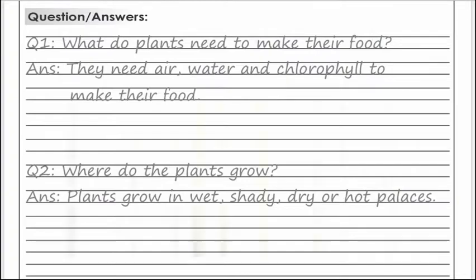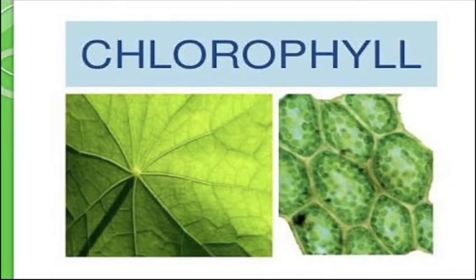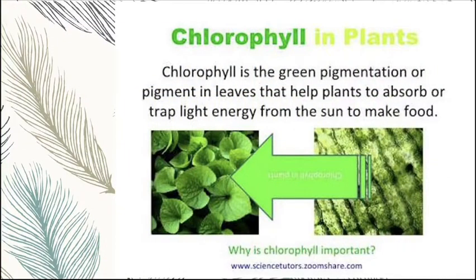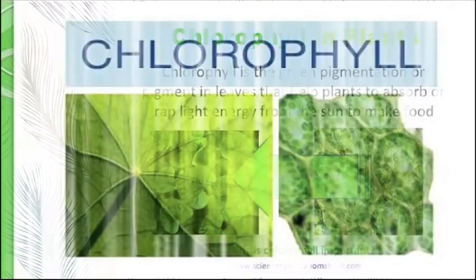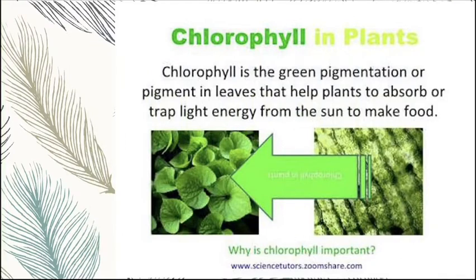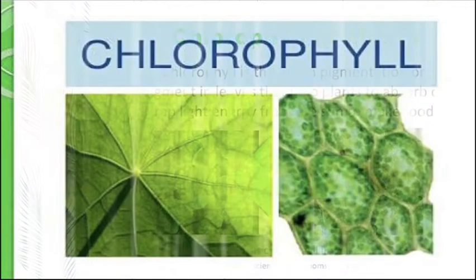What is chlorophyll? Chlorophyll is a green substance — you can see it in this picture. Chlorophyll is a green pigment in leaves that helps plants to absorb or trap light energy from the sun to make food. Yeh green substance hota hai leaves ke upar jo unko help karta hai ke sun se energy ko absorb kar le, aur phir unka food banata hai.